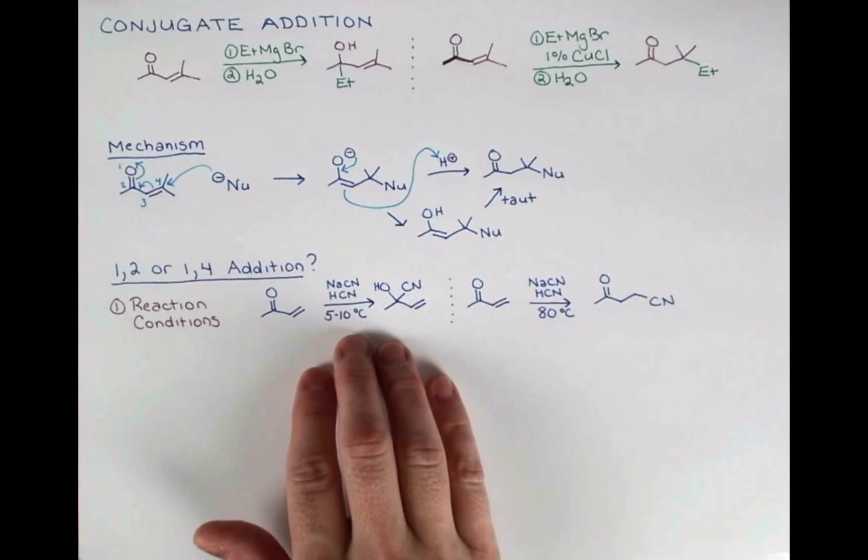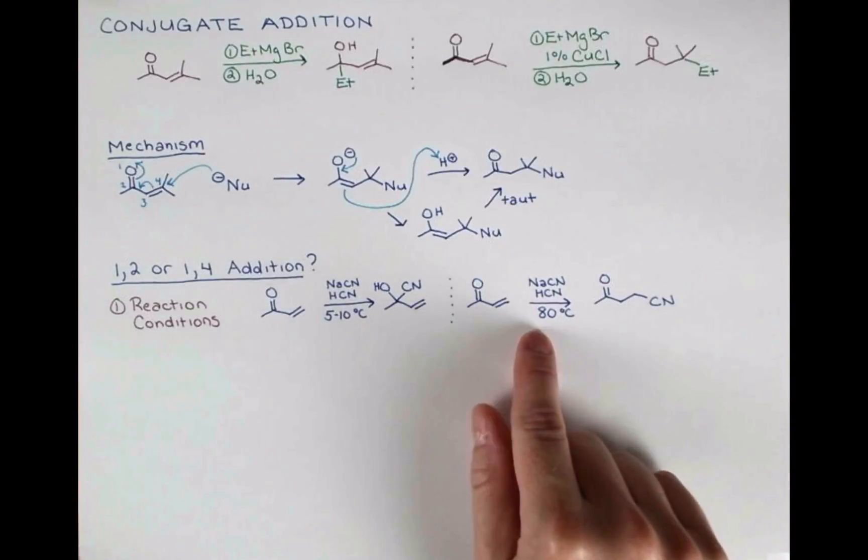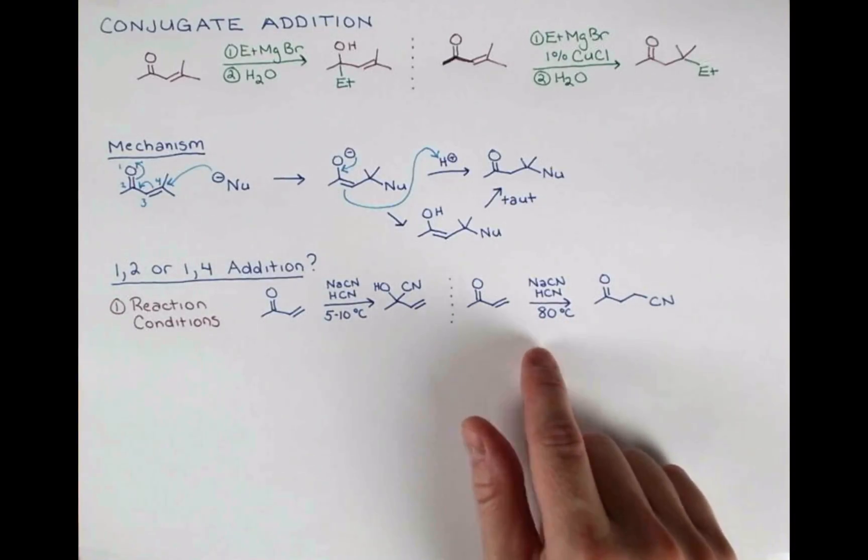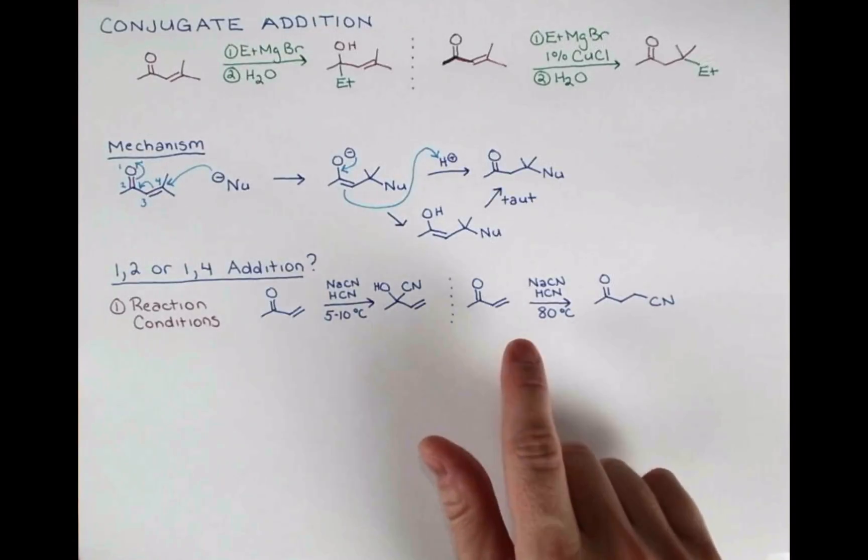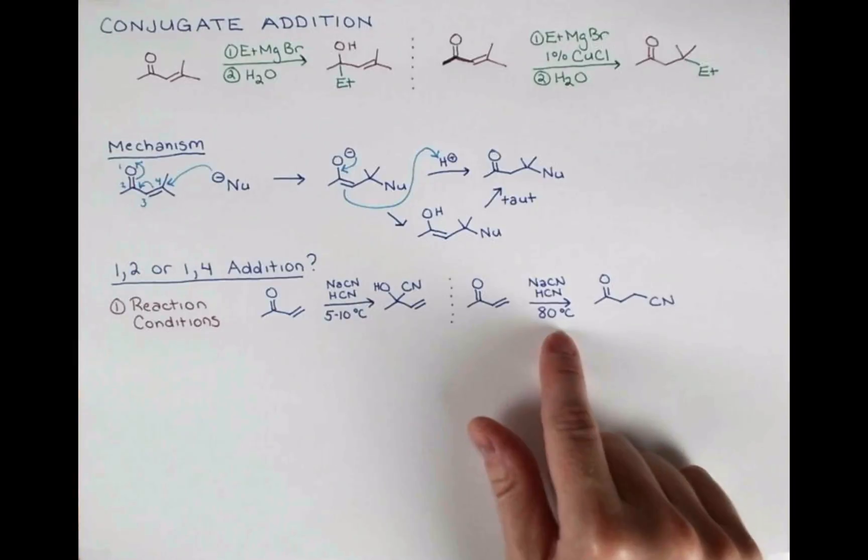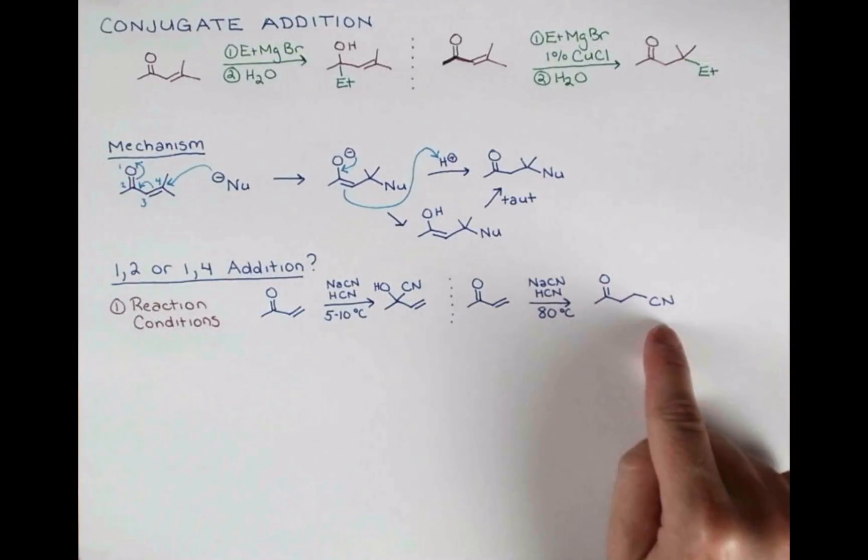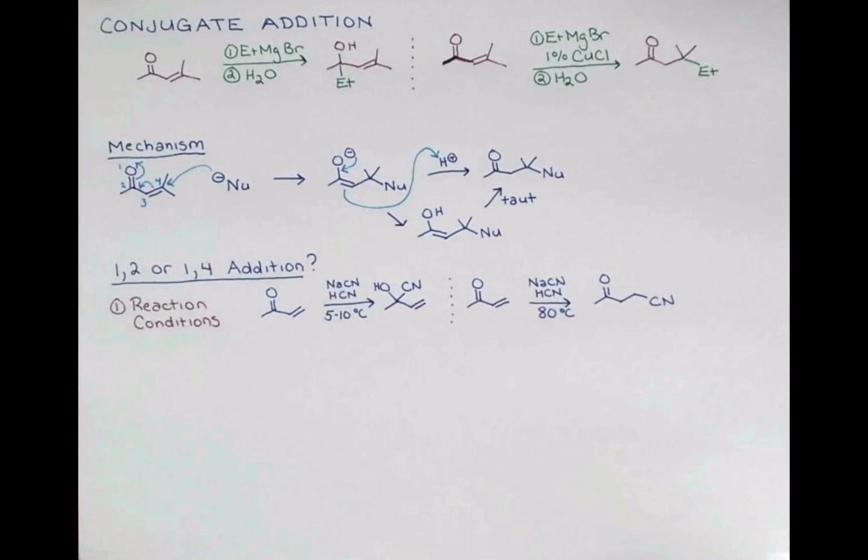So when we run this reaction at cool temperatures, cyanide prefers to add 1-2. And when we run it at warm temperatures, cyanide can add 1-2 as well, but that reaction is reversible. And under these equilibrating conditions, we start to funnel to this product, and the product of 1-4 addition cannot reverse the reaction. So let's look at that mechanism and see why.